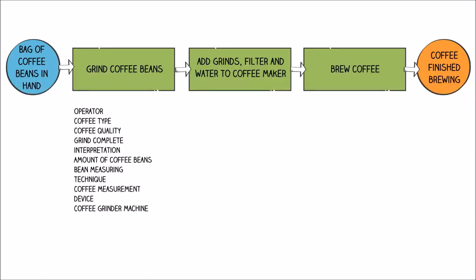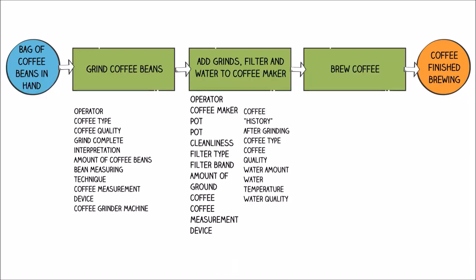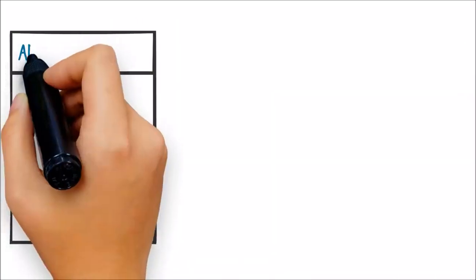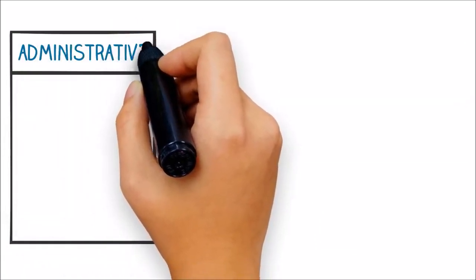The question then becomes, are we actually getting the correct inputs into the process and at the right time? When listing these inputs, it can be helpful to think in terms of three different categories: Administrative, Manufacturing, and Service.